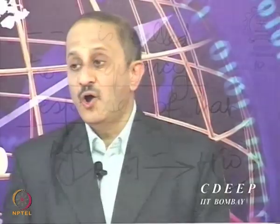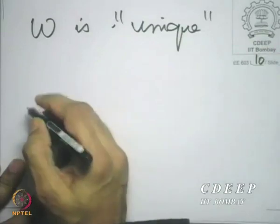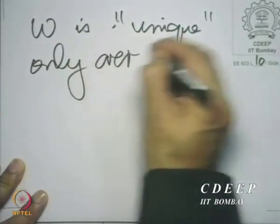We employ a combination of these ideas. X(omega) is like the projection of the sequence x[n] onto the sequence e raised to the power j*omega*n. Therefore, we would agree that you could possibly represent or reconstruct x[n] from its projections, as you can do in the case of vectors. Omega is unique only over any interval of 2*pi.